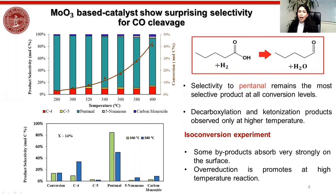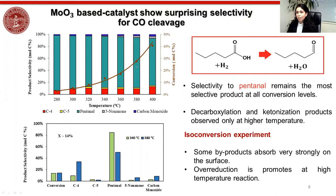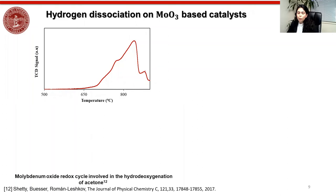One explanation for this difference in product selectivity is that some byproducts, like CO, can adsorb very strongly on the surface. Also, at high temperatures, over-reduction is promoted, which enhances decarboxylation and ketonization reactions. As mentioned, this catalyst is very good for breaking the C-O bond without saturating the C=C bonds.